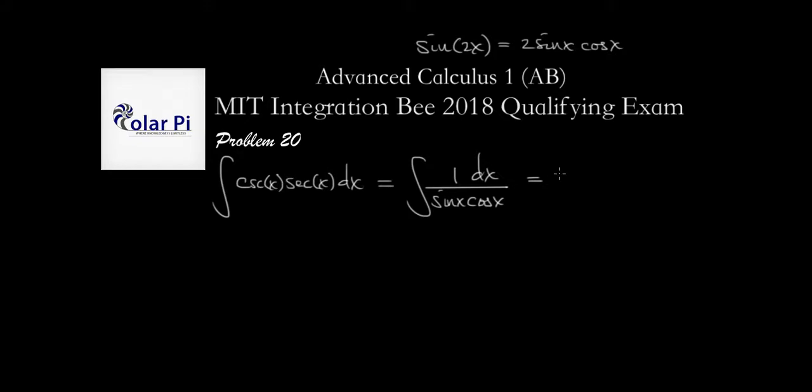But that's an easy fix. We can write a 2 right here, so we have 2 times dx, and then divided by, and now we can introduce the desired 2 in the denominator, and write 2 sine x cosine x.